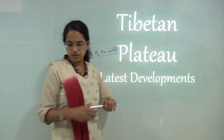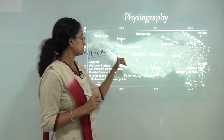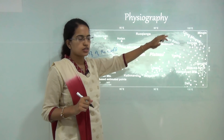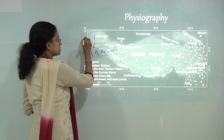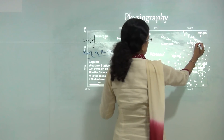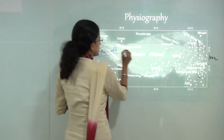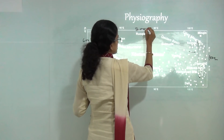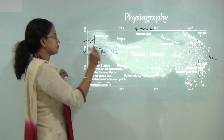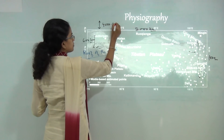It has been rightly called the roof of the world. If you look at the physiography of the region, you have Tibetan Plateau surrounded by Himalayas on the southern edges and the Kunlun mountain ranges on the northern edges. The western extent is around 600 km as compared to the eastern extent of around 1000 km. The width is assumed to be around 2000 km, and the height of the Tibetan Plateau, which plays a significant role, is around 4000 to 4500 meters.